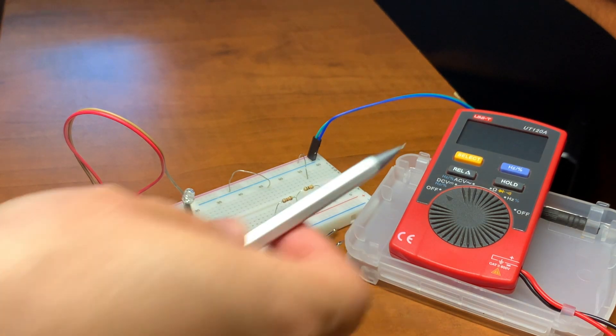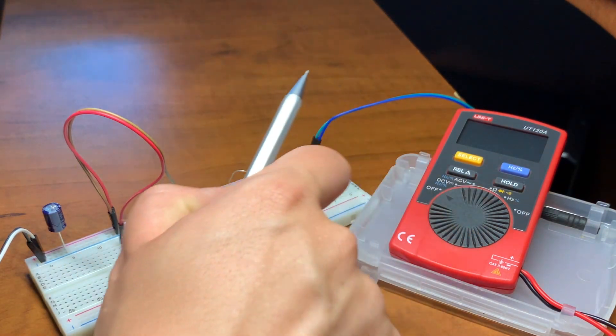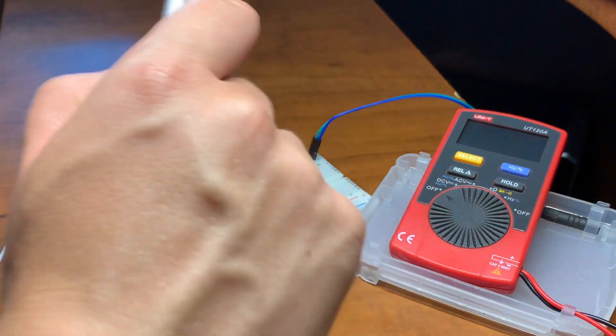The multimeter is very simple. It has DC-AC voltage, resistance, diode, continuity buzzer, and frequency measurement.